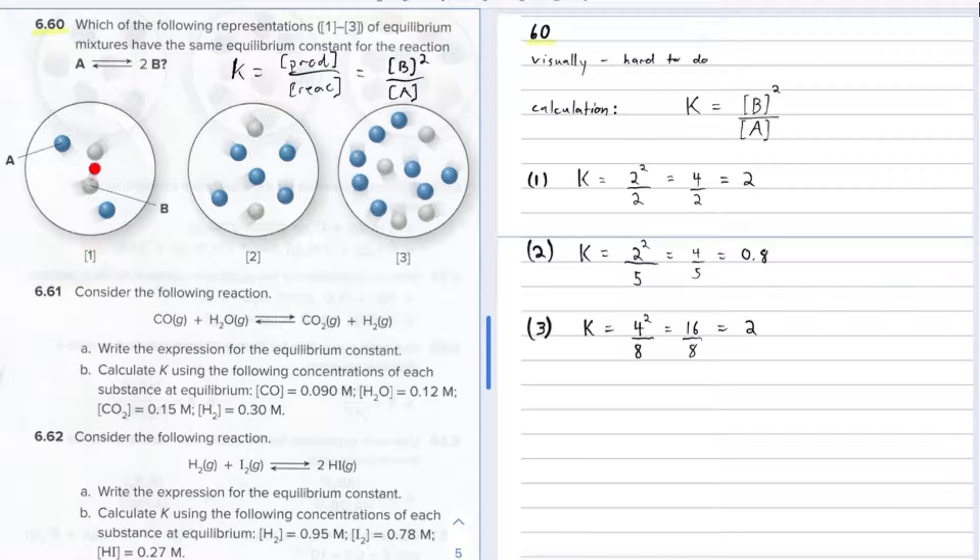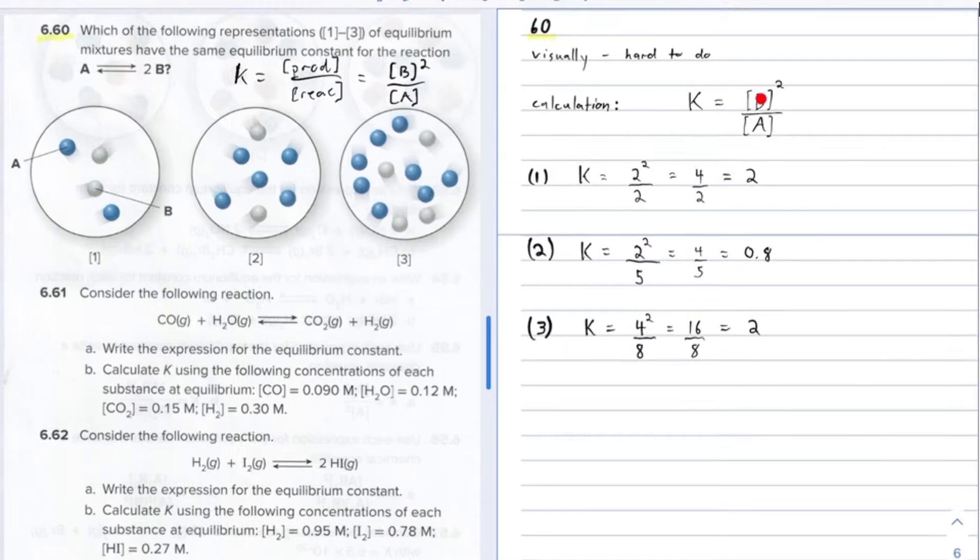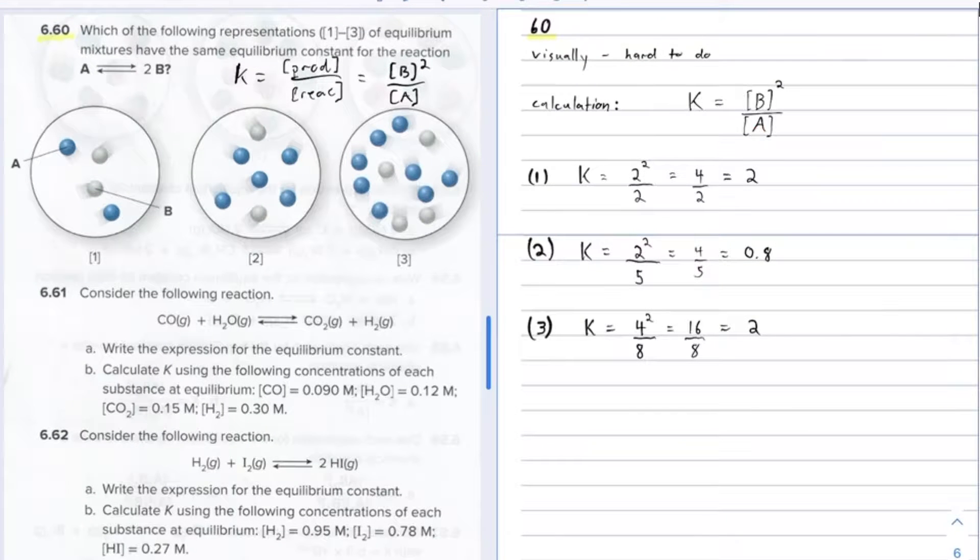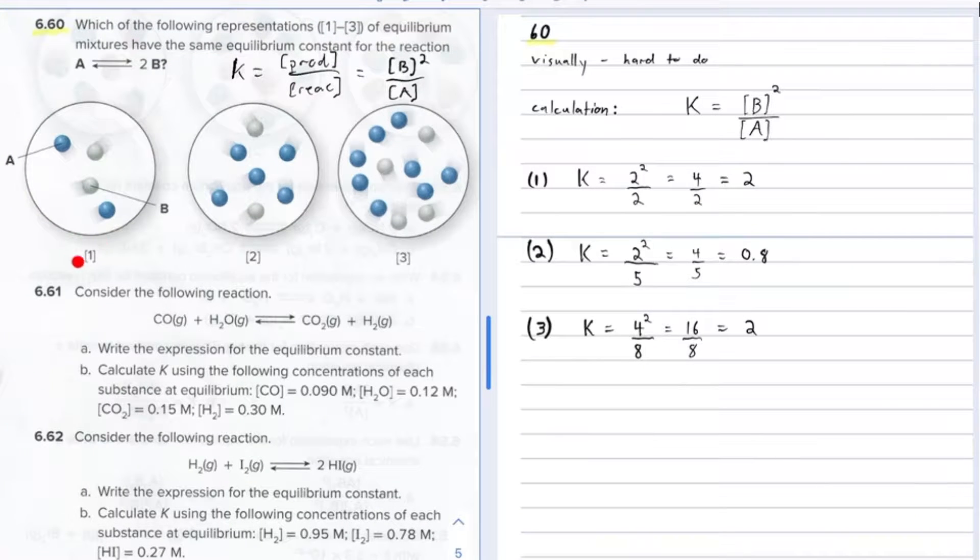So for the first one, we can plug in, we have two molecules or two particles of B, we plug that in upstairs, so you got two squared, and then you have two molecules of A that's going to go downstairs. So it's going to be two squared over two, that's equal to four over two, which is two. So the equilibrium constant for number one is two.